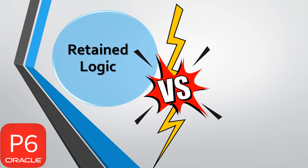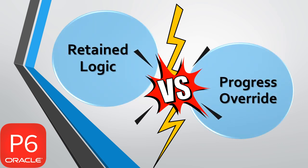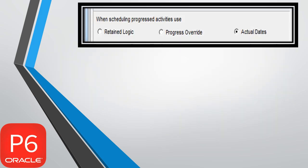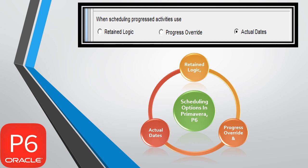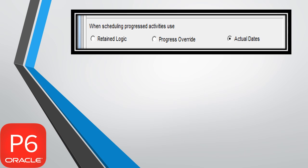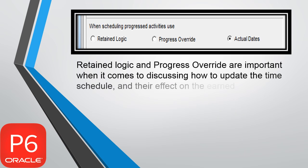Retained Logic, Progress Override, and Actual Dates are scheduling options in Primavera P6. Retained Logic and Progress Override are important when it comes to discussing how to update the time schedule and their effect on the earned value calculations.